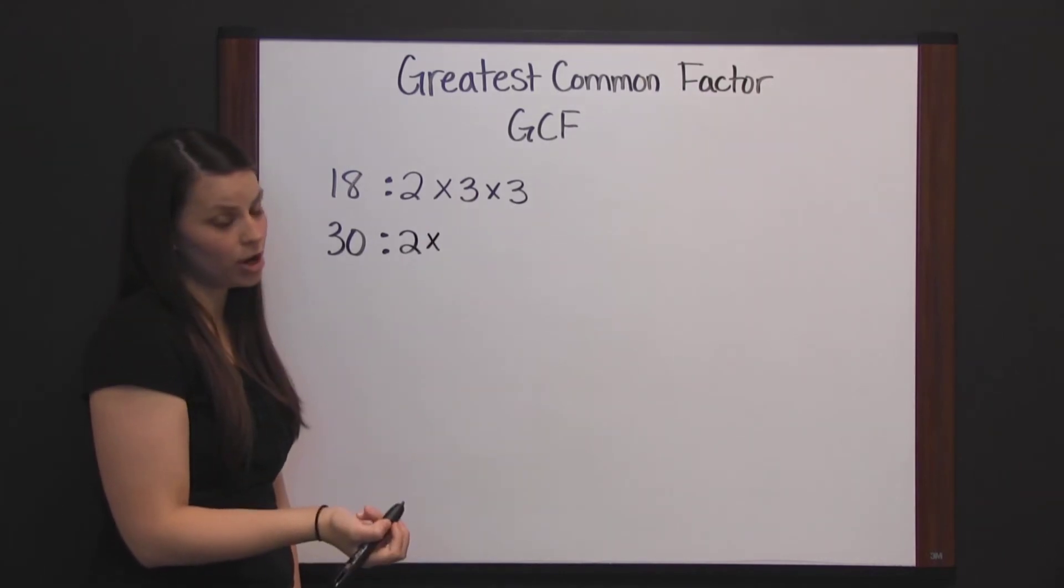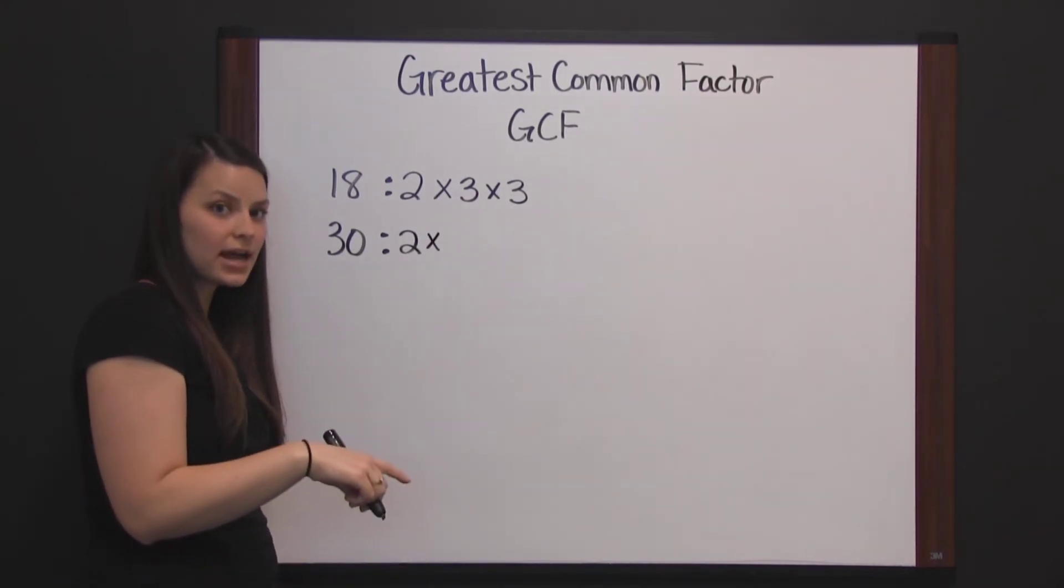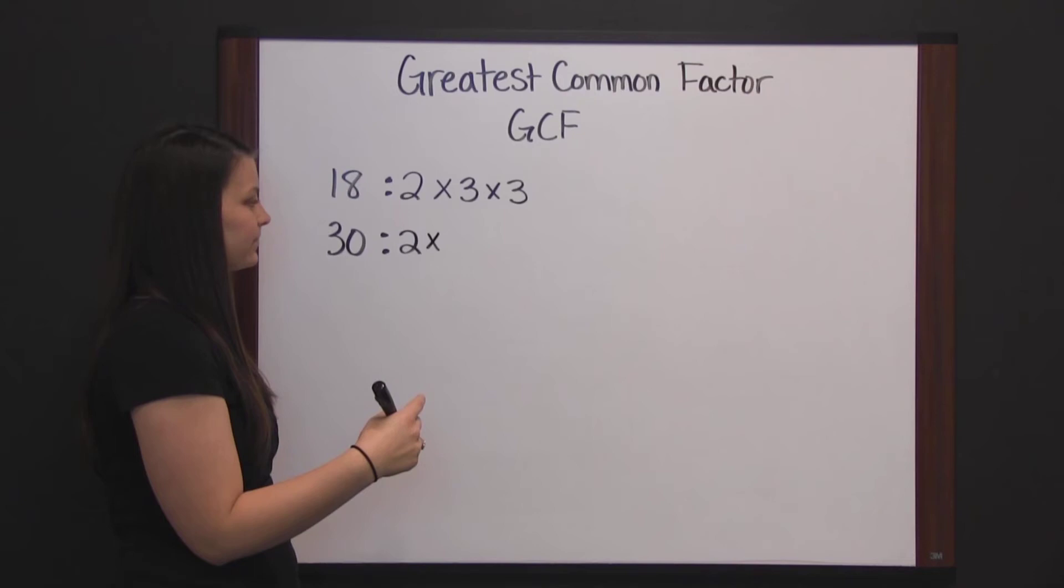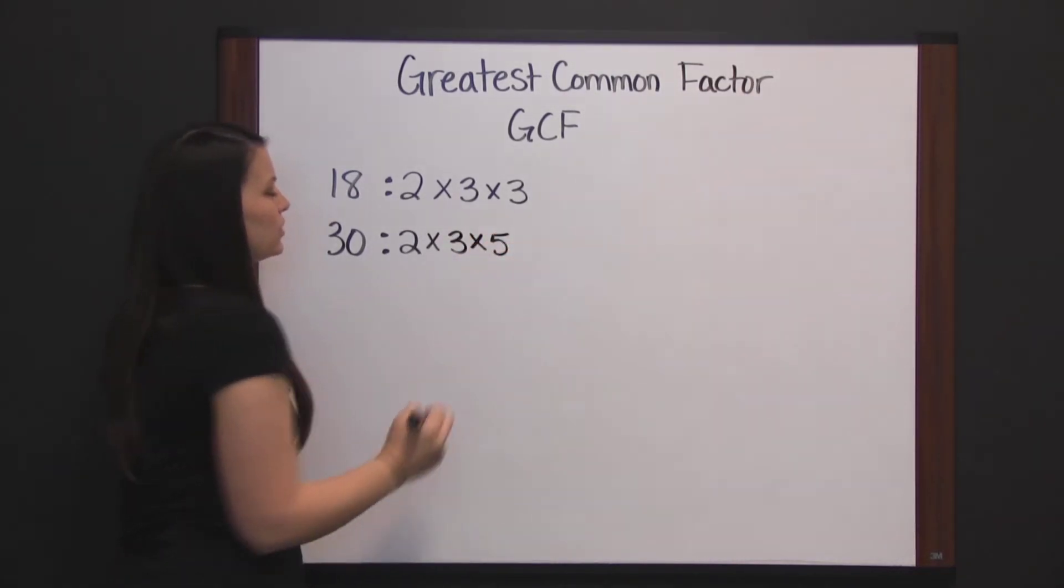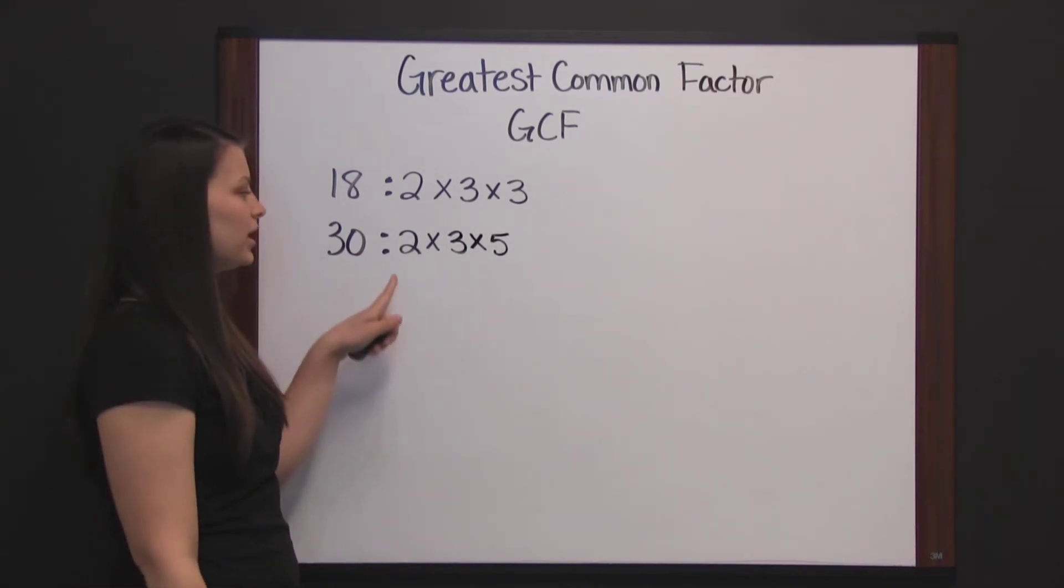So we have to break it down into its prime factors. And fifteen's prime factors are three times five. So the prime factorization of thirty is two times three times five.